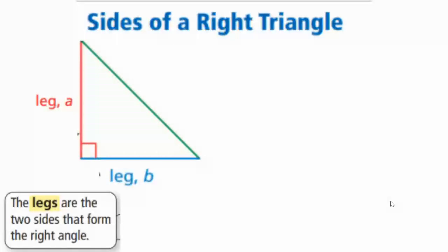And again, the legs are the two sides that form the right angle. If you notice right there, that's what the right angle's made up of, those two sides of the triangle there.